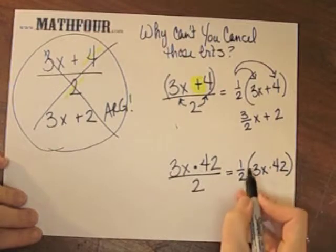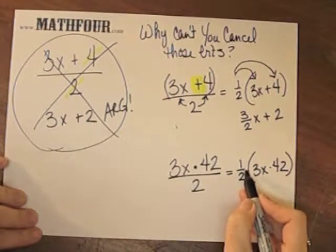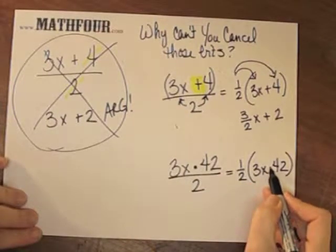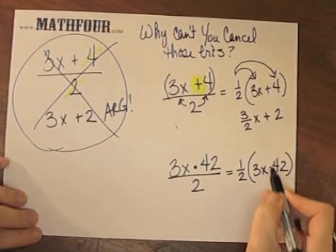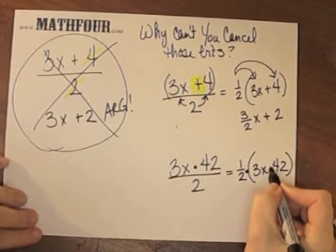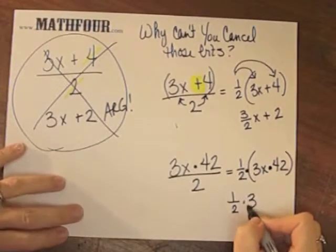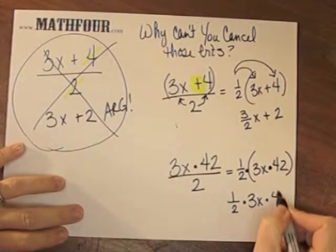Well, in order for the distributive property to work, it has to be multiplication or division out here and addition or subtraction on the inside. This is not addition or subtraction. This is multiplication. This has the same power as this. Therefore, this is the same as this.